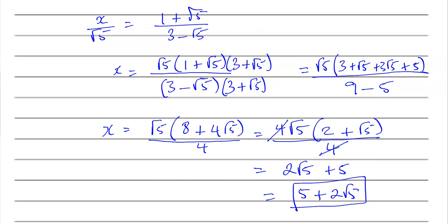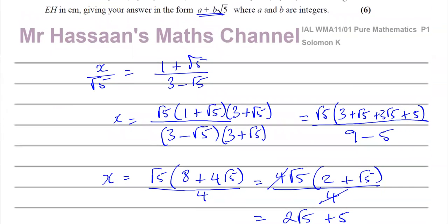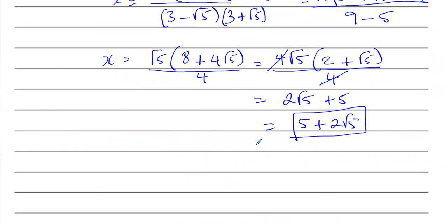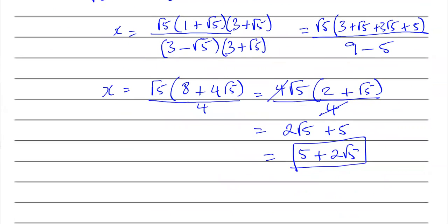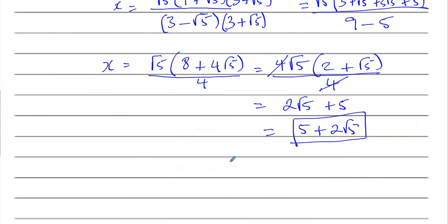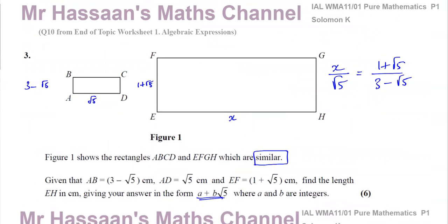So the answer is 5 + 2√5. The question says a and b are integers and wants the answer in the form a + b√5. So if you wanted to state them explicitly, a = 5 and b = 2. Don't leave it in a factorized form — write it as 5 + 2√5, matching exactly the format they want: a plus b root 5.